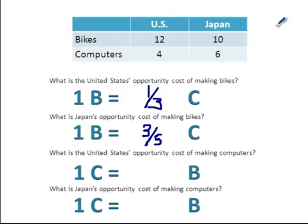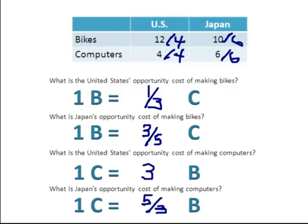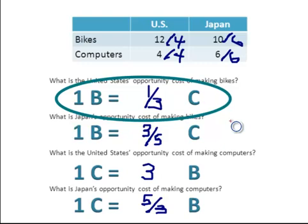Once we find the opportunity cost for producing one bike we need to look at the opportunity cost of producing one computer. We follow the same formula — divide both products that the nations produce by the number of computers they can produce. For the United States the opportunity cost of producing one computer is three bikes. Now we look at who has the lowest opportunity cost. One-third is smaller than three-fifths, so the United States has the lowest opportunity cost in producing bikes.